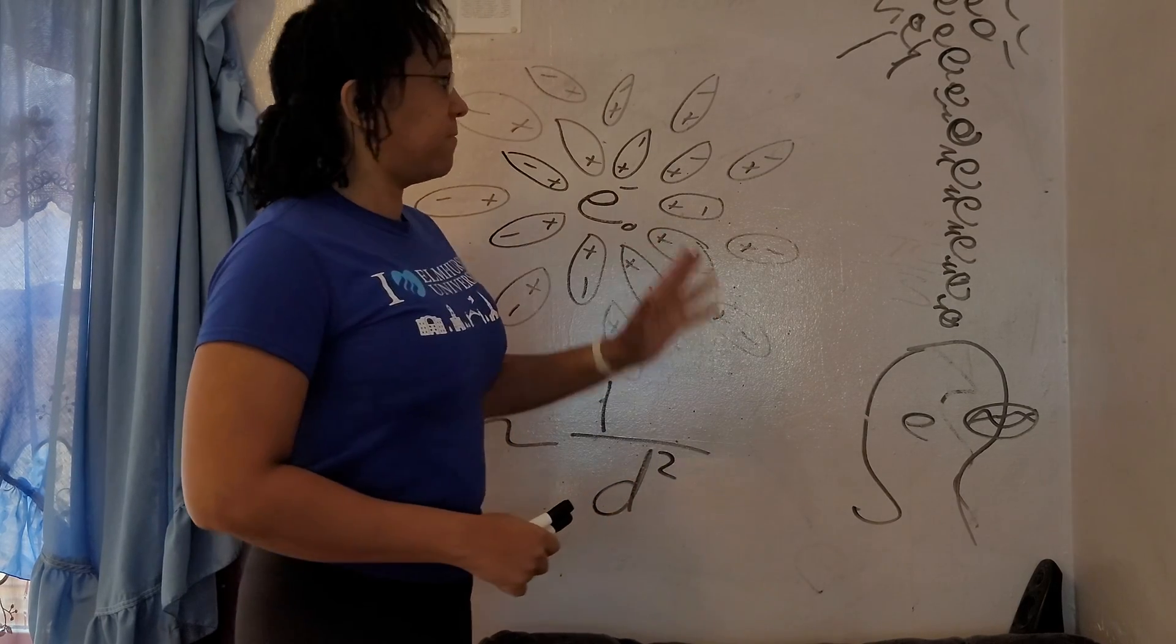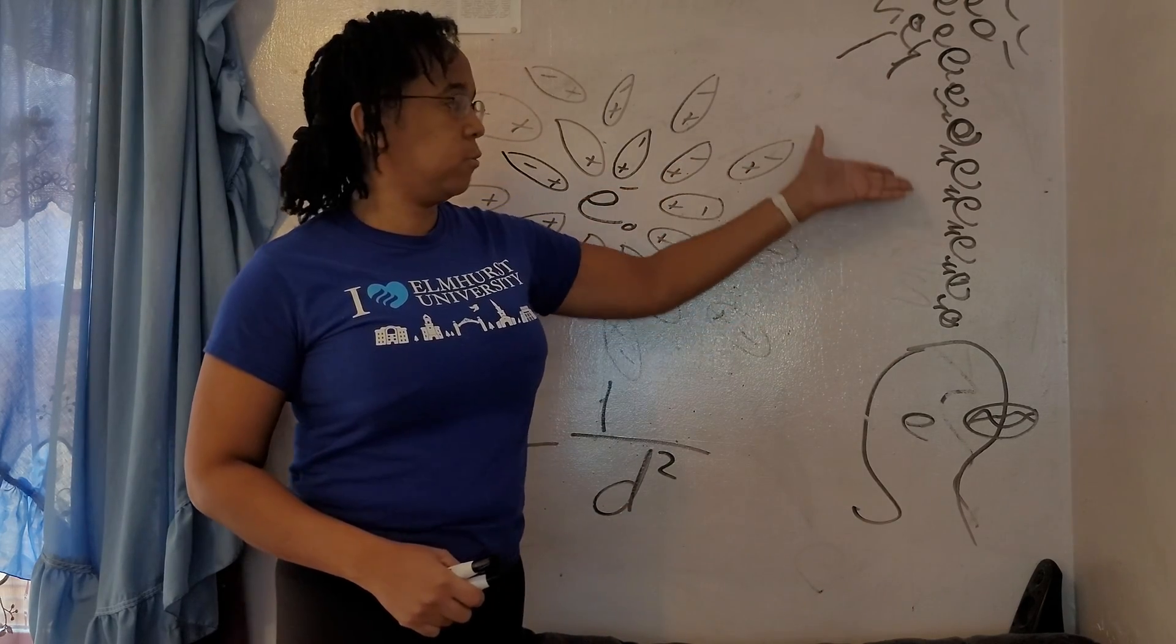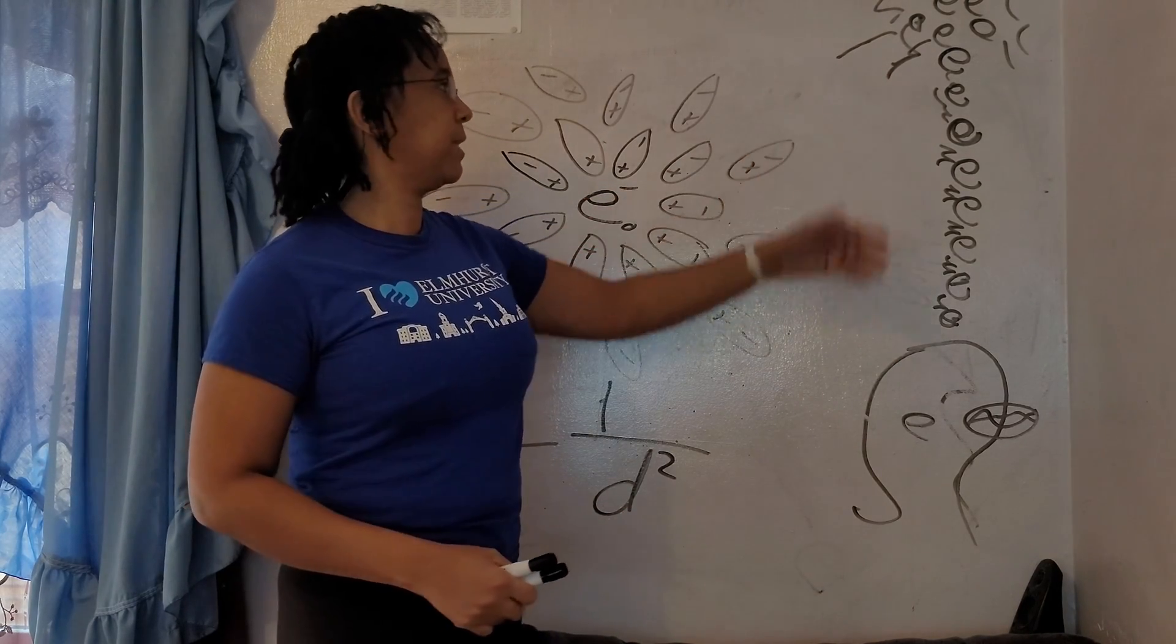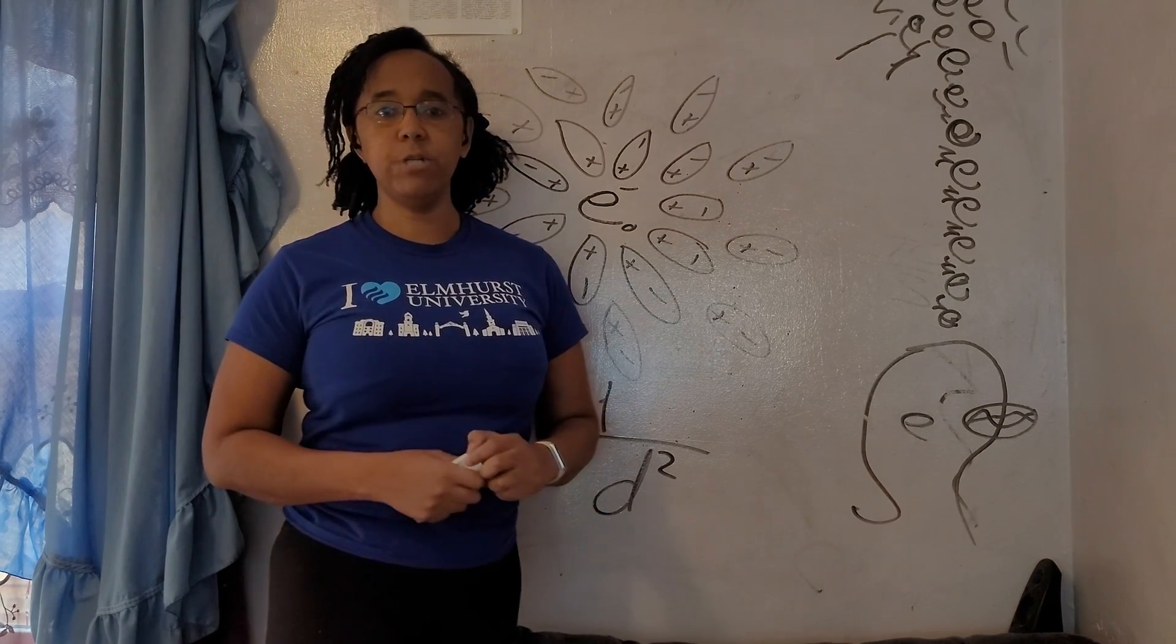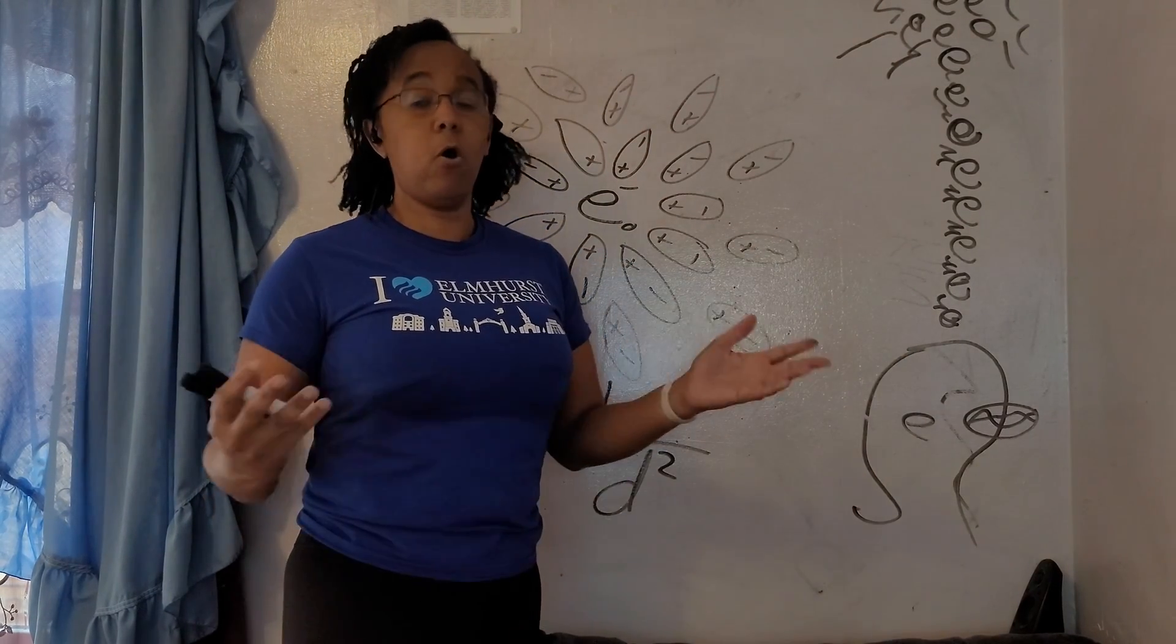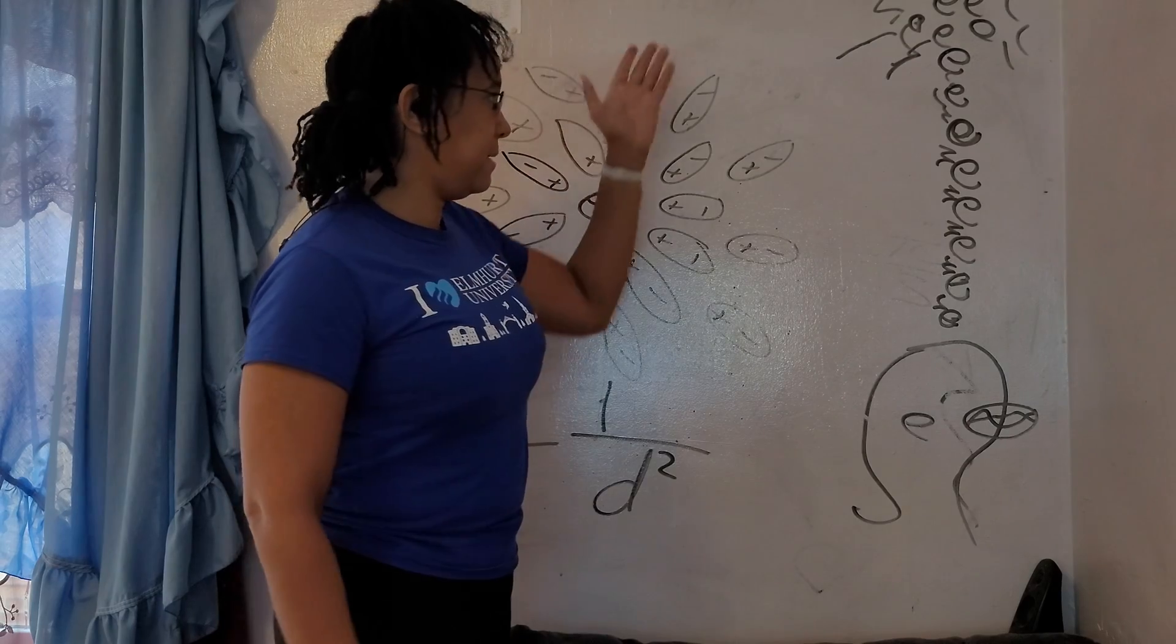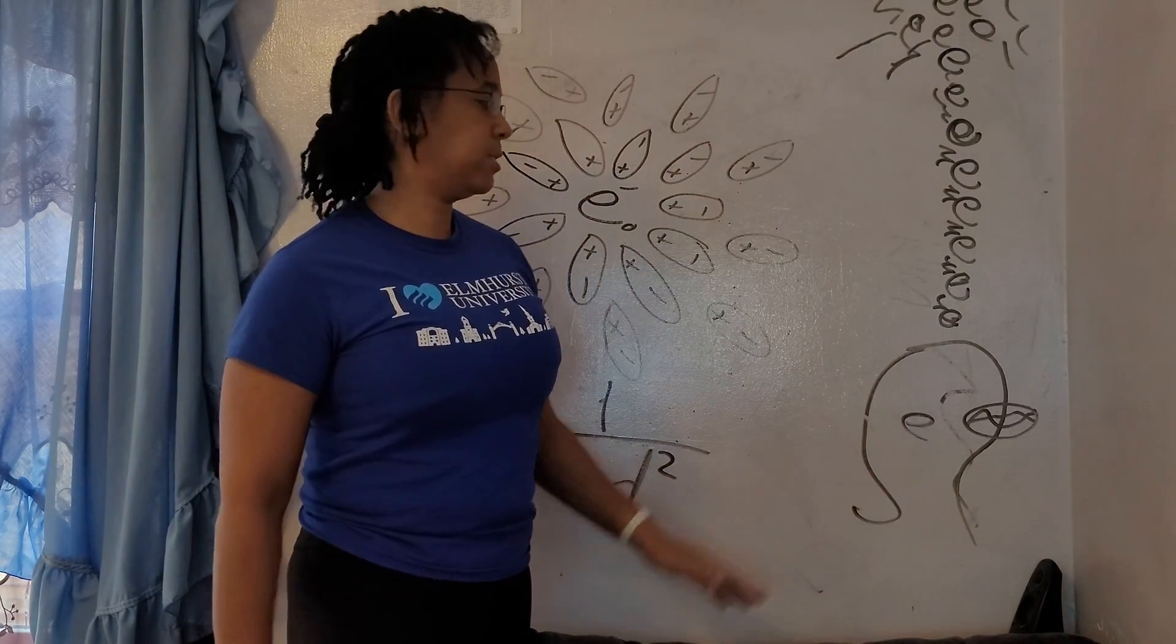So he's right that fields are what carry the energy, because quantum field theory agrees with that. But he's wrong that wires don't carry the energy. Because when you really get down to it, both the battery, the wires, and the bulb are all fields. And it all happens through the wires for the most part at the speed of light.